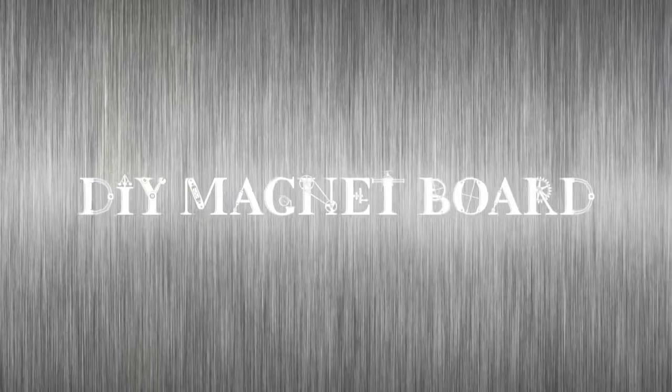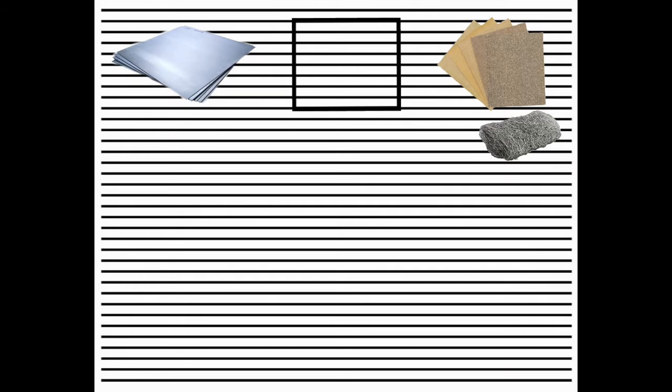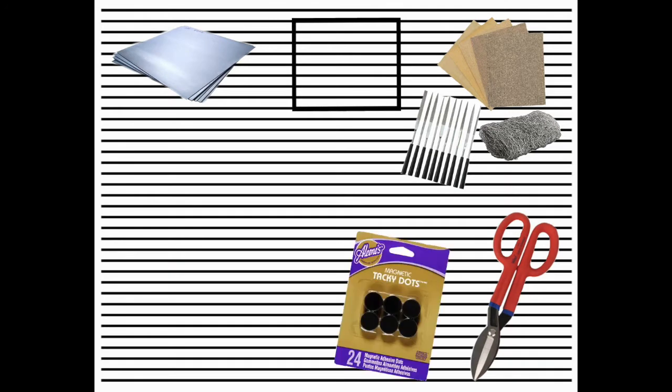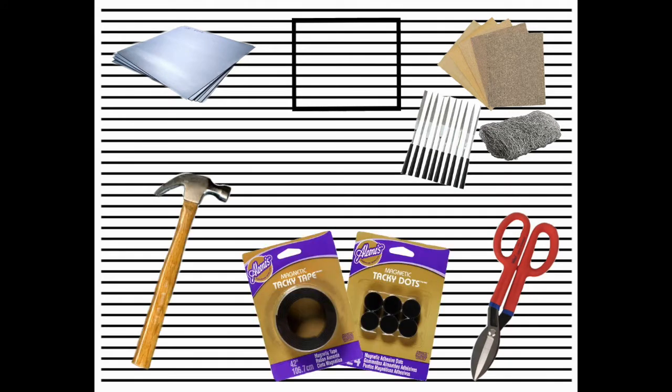For a final DIY we'll be making our own DIY magnet board. What you'll need for this project is some aluminum sheet metal, picture frame, some sandpaper or steel wool, some needle files that I got from Harbor Freight, those are optional though, some metal snips, any kind of magnets that you want to use, a hammer and nails.